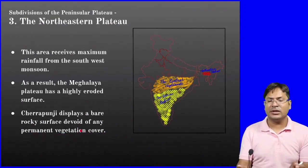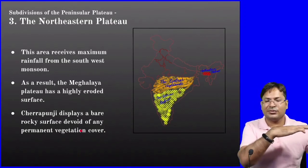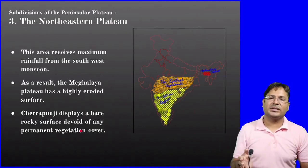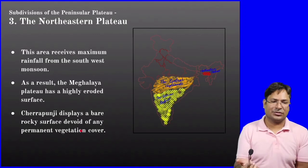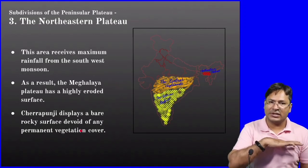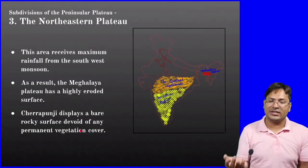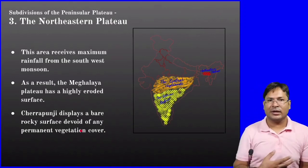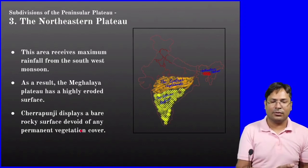In Cherrapunji, the surface of the mountains or plateau is a completely rocky surface. Because of this rocky surface it is vegetation-free — there is no permanent vegetation cover in Cherrapunji or the area which receives the highest rainfall on this plateau.